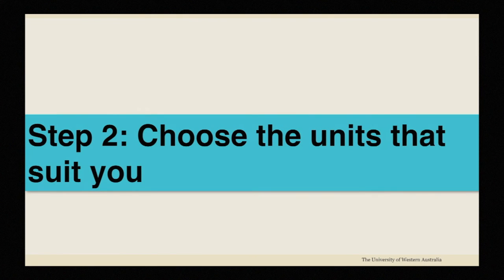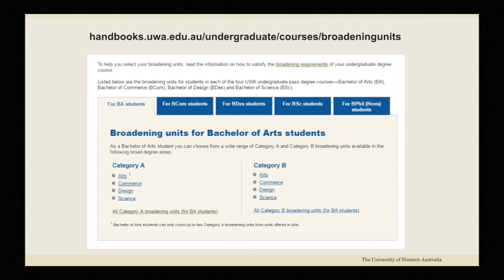You can choose the units that suit you from a wide range at UWA. They are all listed in the handbook. Just choose the degree course you're studying to see the broadening units available to you. Each degree is listed in the tabs across the top.